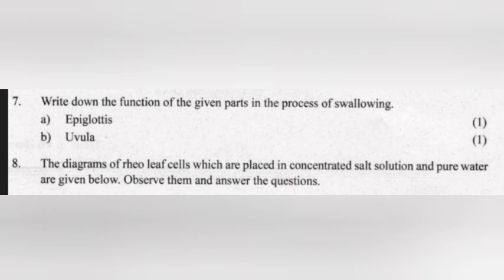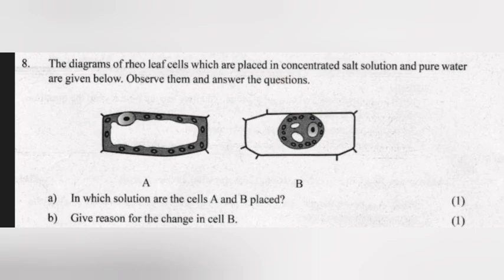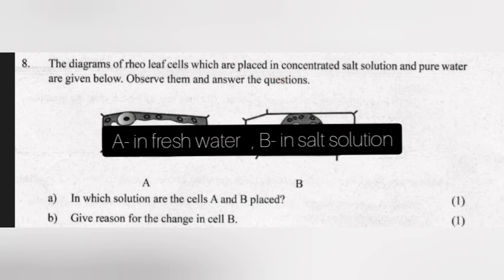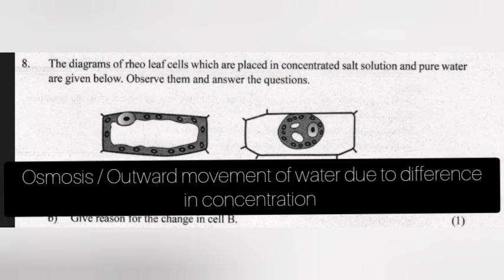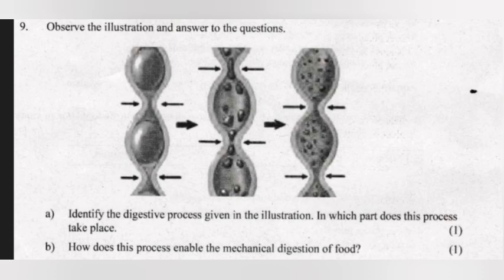Question 8: The diagram of leaf cells placed in concentrated salt solution and pure water are given. Observe them and answer. A — In which solution are cells A and B placed? B — Give reason for the change in cell B. Answer: A — Cell A in fresh water, Cell B in salt solution. B — Osmosis, or outward movement of water due to difference in concentration.